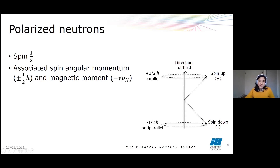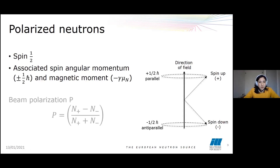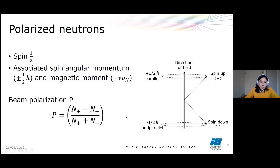The way we can know if our neutron beam is polarized or not is given by this relation, where we have N-plus — the number of neutrons with spin parallel to the field — and N-minus — the number of neutrons with spin anti-parallel to the field. In this simple relation, for one axis, we can say our beam is polarized if P equals one, and the beam is not polarized if P equals zero.